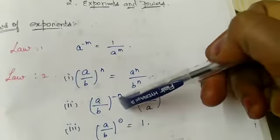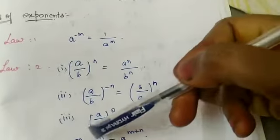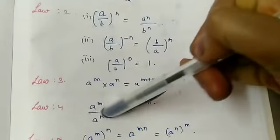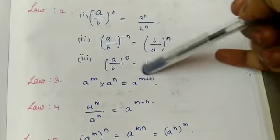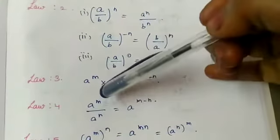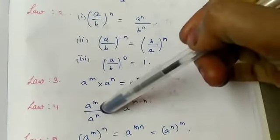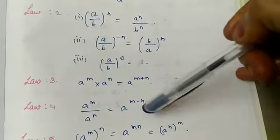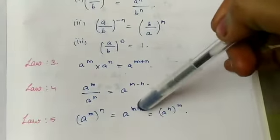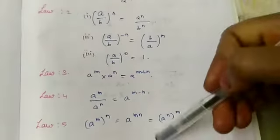Next: (a/b)^(-n) — since the power is negative, it is reciprocally changed to (b/a)^n. Also, (a/b)^0 = 1, since any number to the power 0 equals 1. Law 3: a^m × a^n = a^(m+n) — same base in multiplication, powers are added. Law 4 (quotient law): a^m ÷ a^n = a^(m−n) — same base in division, powers are subtracted. Law 5: (a^m)^n = a^(mn) — powers are multiplied. Copy all five laws into your classwork notes.